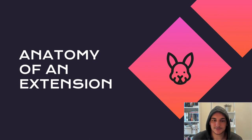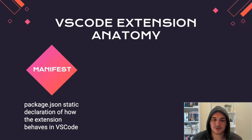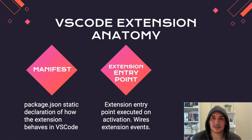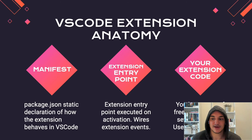Let's build a better mental model of the anatomy of an extension. First we have the manifest — the package.json file — which is a declarative declaration of how your extension behaves in VS Code and how it enhances VS Code in different ways. We have the extension entry point, extension.ts, where your application gets activated and registers different event handlers for commands or UI elements like panels. Finally you have your extension code, with freedom to structure it as you like, and this code exercises the VS Code API to achieve something useful for the user.